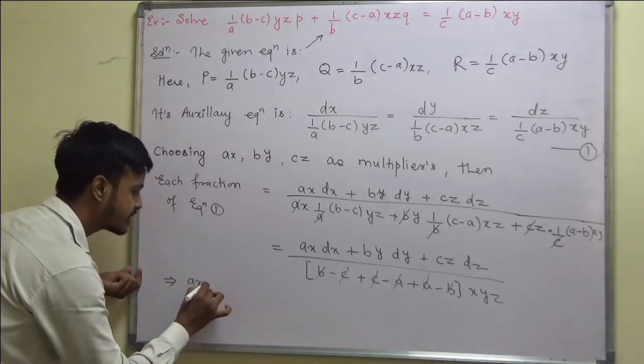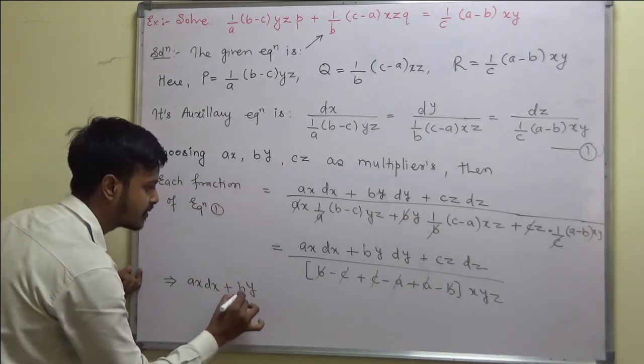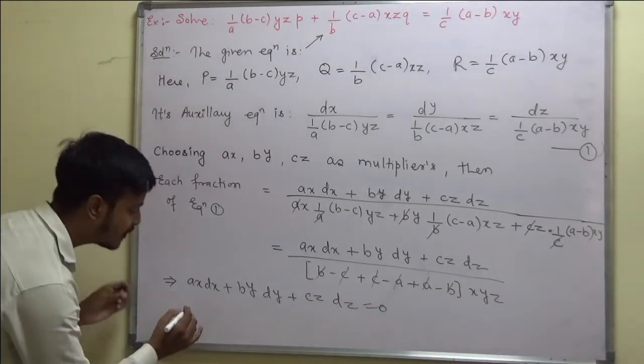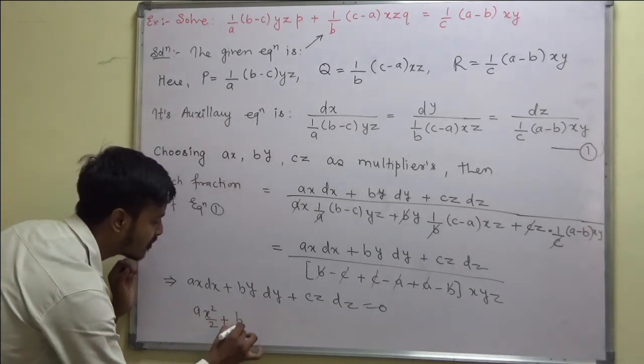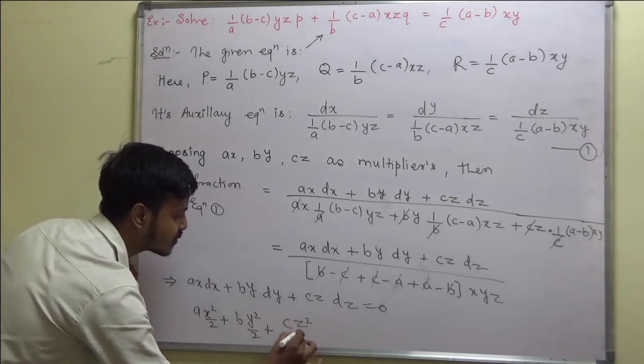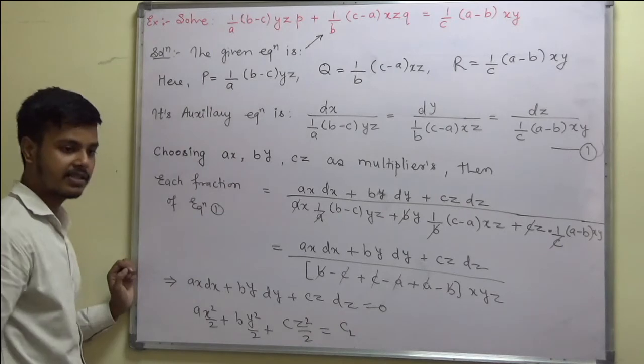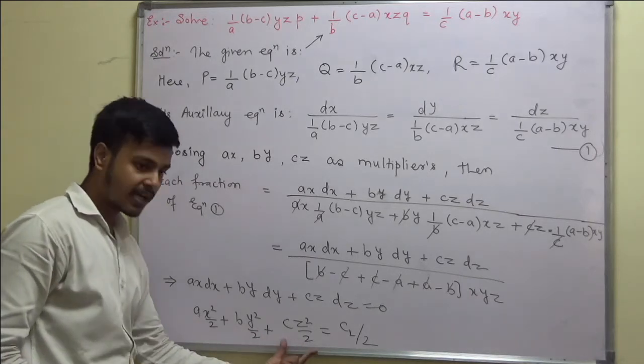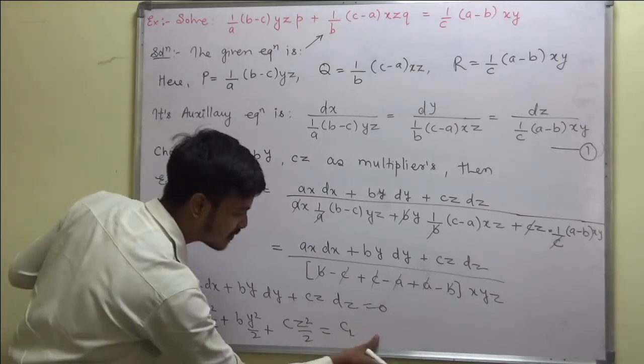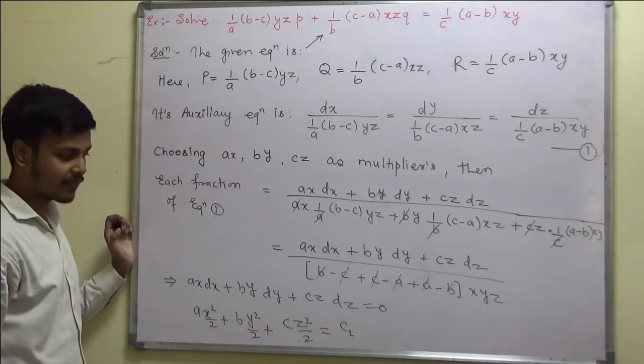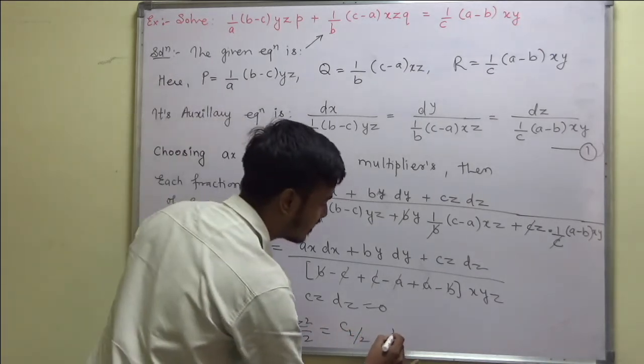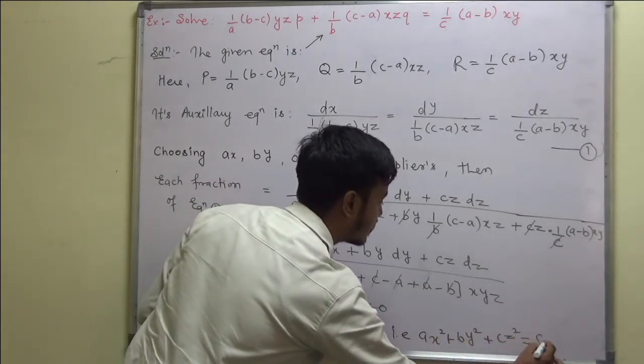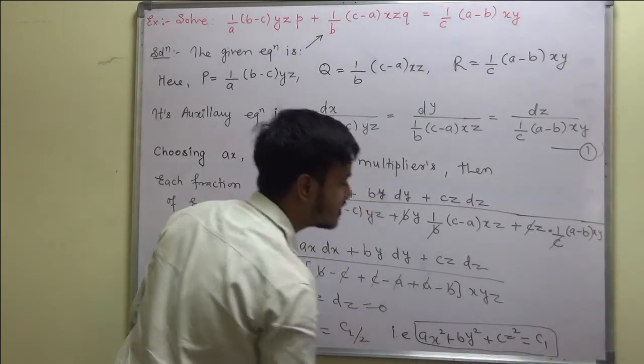This implies a·x·dx plus b·y·dy plus c·z·dz equal to 0. Now integrate this. When you integrate this, you will be getting a·x² by 2 plus b·y² by 2 plus c·z² by 2 is equal to some constant. You can take c₁ by 2 because all the terms are having 2. Then 2 gets cancelled and you can write that is a·x² plus b·y² plus c·z² is equal to c₁. So this is my first integral solution.